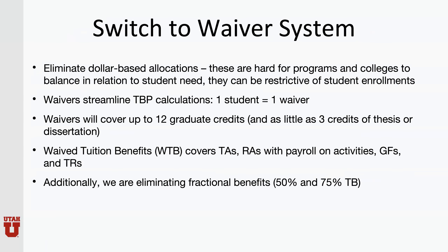We will be switching from a dollars and cents allocation system to a waiver system. Dollars and cents allocations have proven to be difficult for programs and colleges to balance in relation to student need — they can be restrictive to student enrollments and a simple understanding of strategic enrollment management in each program. Generally, when you graduate one student, you can enroll one student and your resource needs will remain the same. However, with a dollars and cents allocation system mixed with a reduced tuition rate for PhD students in dissertation hours, you need to graduate 2.5 PhD students in dissertation hours to be able to admit one student into coursework for your resources to remain steady. Moving to a waiver system of one student equals one waiver will simplify this process quite a bit.